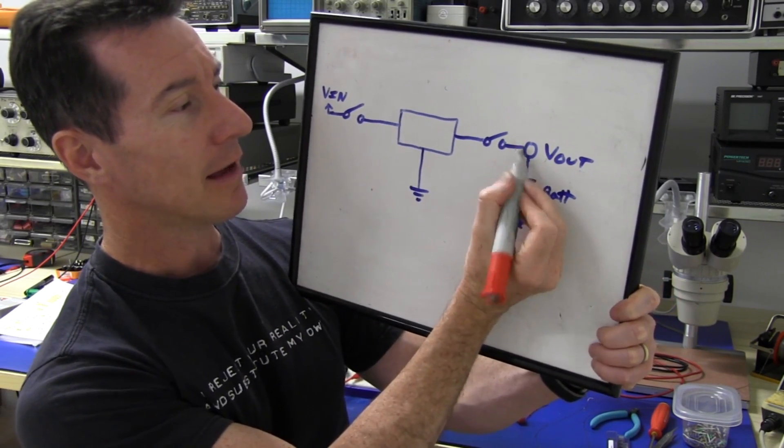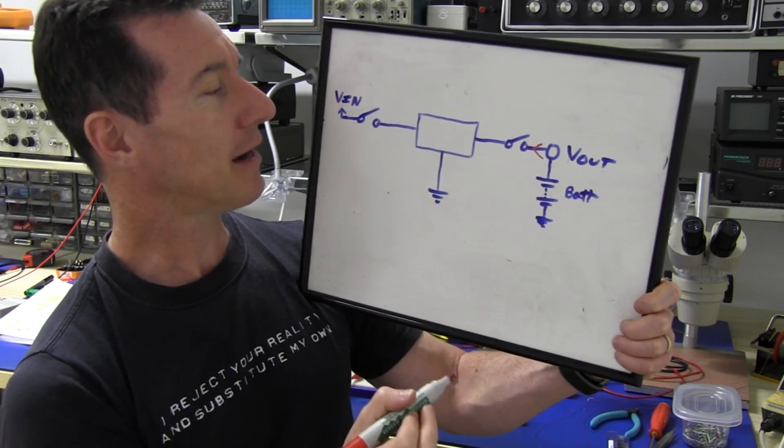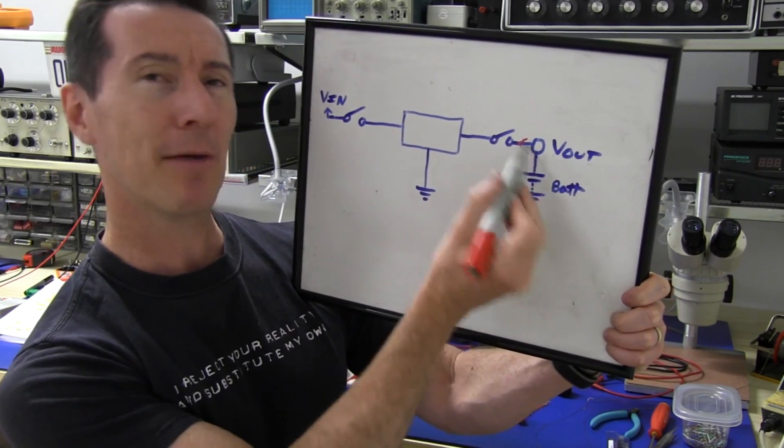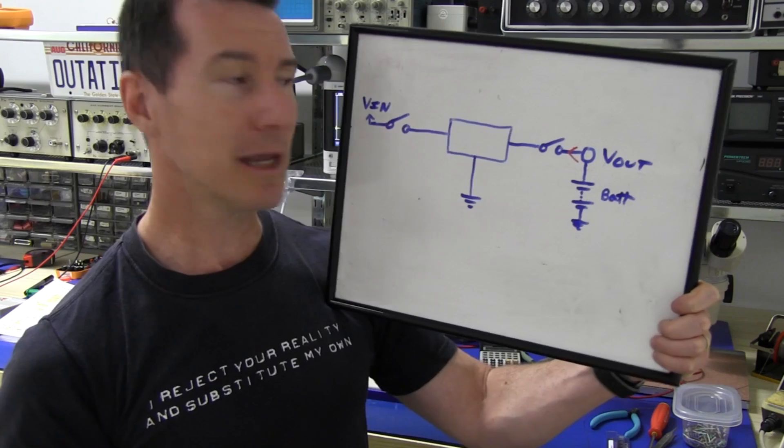If you're feeding back in a supply from a battery, say you're charging it or something like that, and it's going back in, what happens if you've still got the output battery connected but you disconnect this input supply?